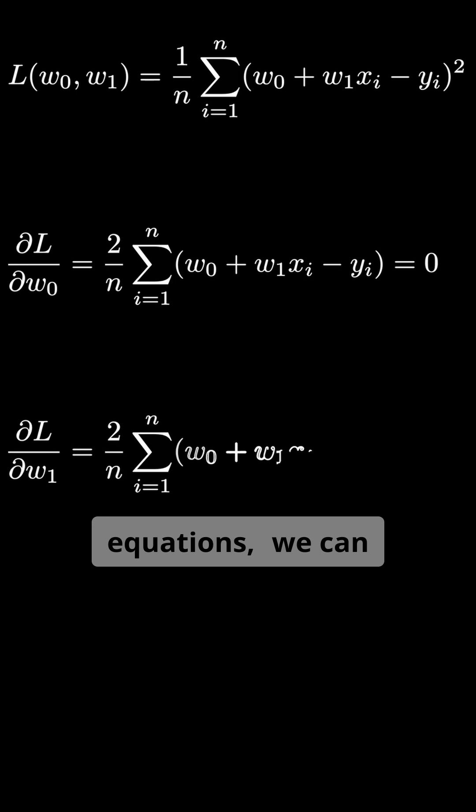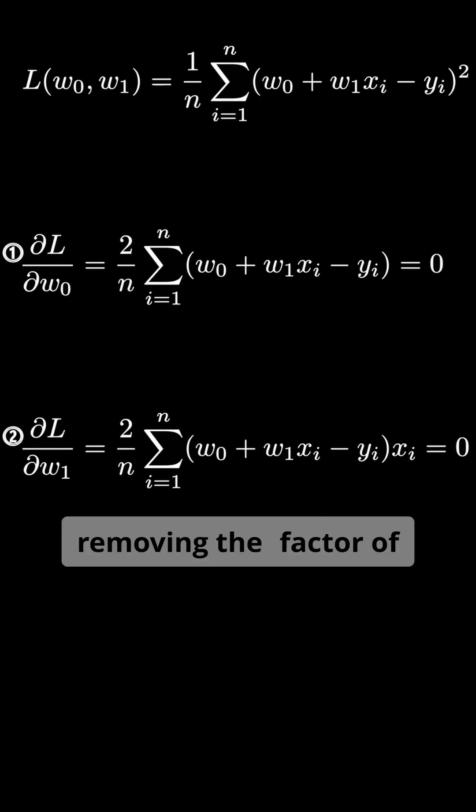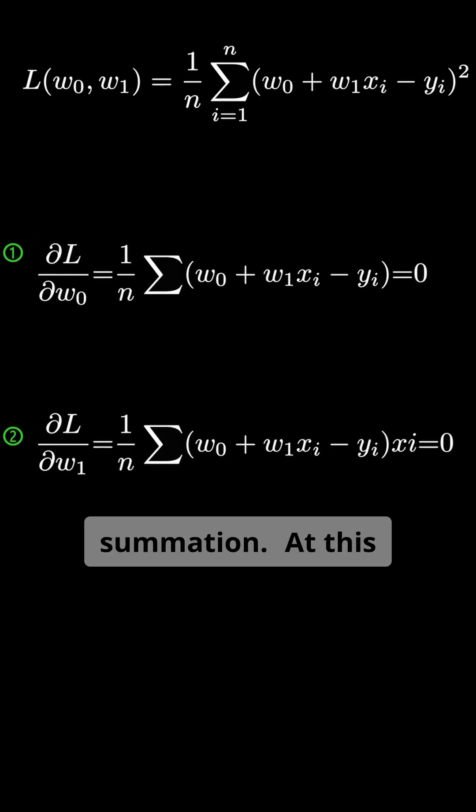For both equations, we can multiply both sides by one-half to simplify, removing the factor of 2, and for convenience, we'll omit the lower and upper limits of the summation.